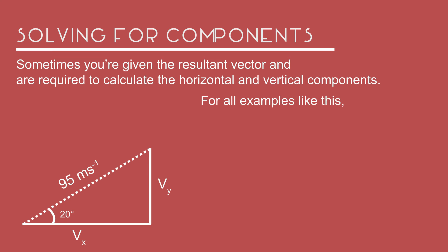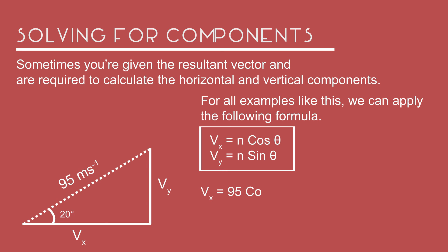For all examples like this we can apply the following formula. Velocity of x is 95cos20, giving us 89.3 meters per second.